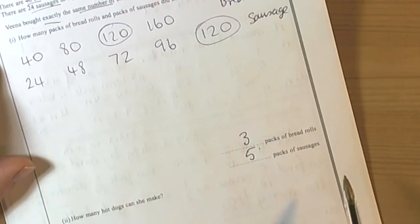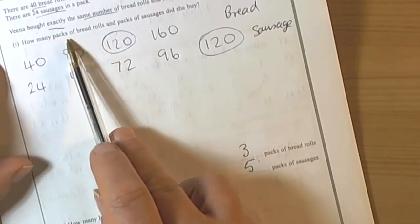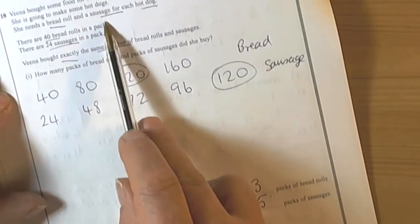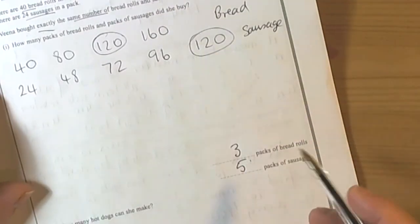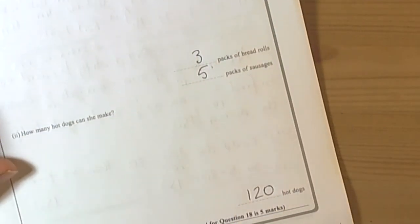How many hot dogs can she make? Well she uses 1 roll for 1 sausage to make the hot dog so it's 1 roll and 1 sausage. So she bought 120 bread rolls so she's going to make 120 hot dogs, 120 altogether.